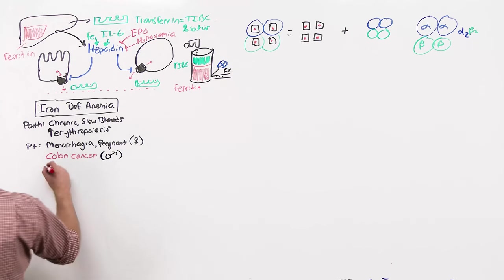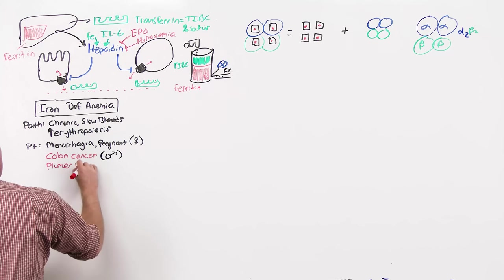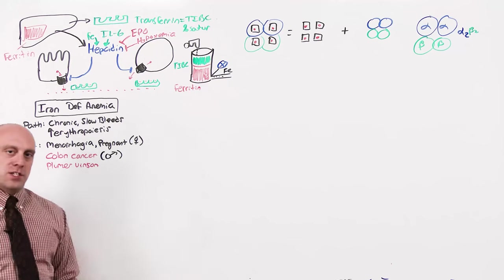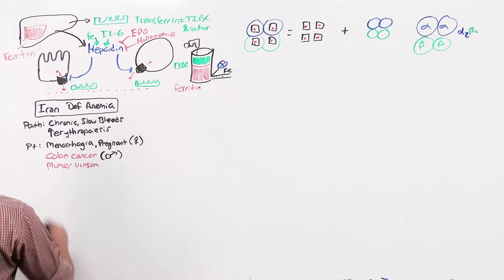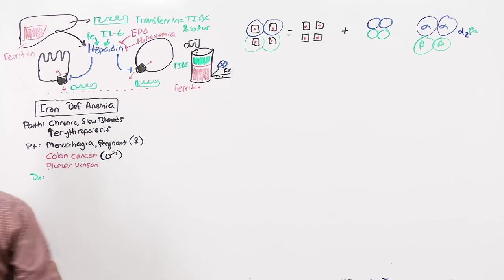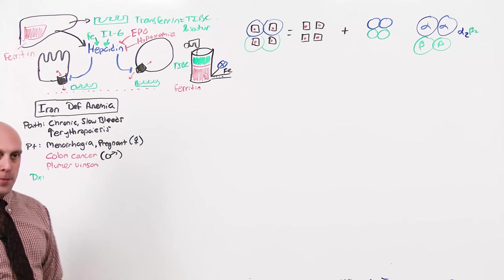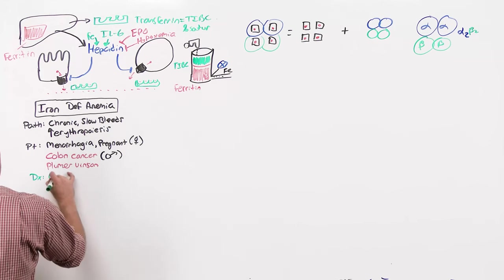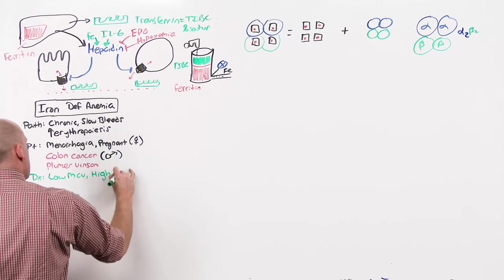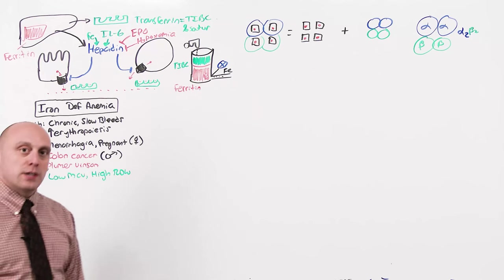Also for the exam, watch out for things like Plummer-Vinson syndrome, esophageal webs, esophageal cancer, dysphagia, and iron deficiency anemia. The only diagnosis that you can make with a CBC, RBC parameters alone is iron deficiency anemia. If you have a very low MCV, I'm talking less than 70, and a high RDW, the diagnosis is made. But the correct way to diagnose iron deficiency anemia is with iron studies.